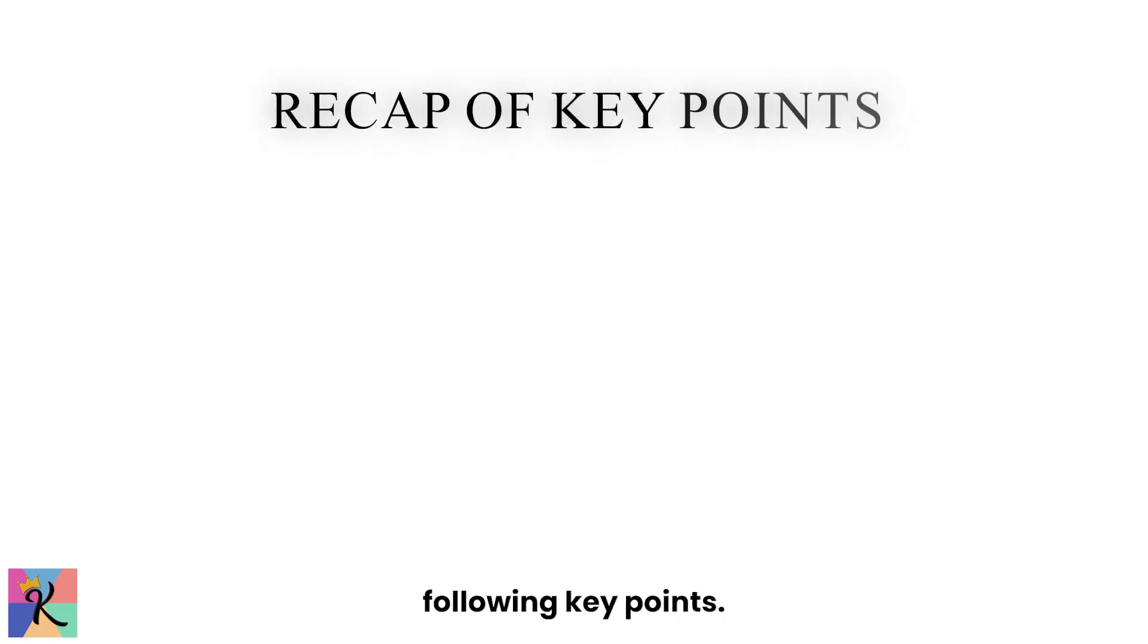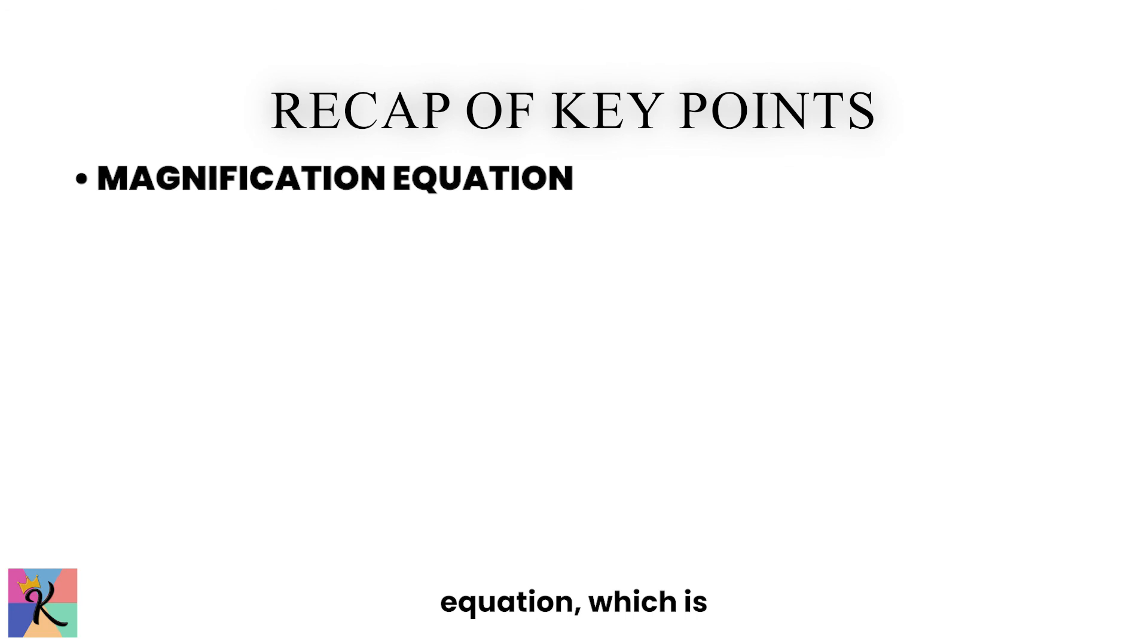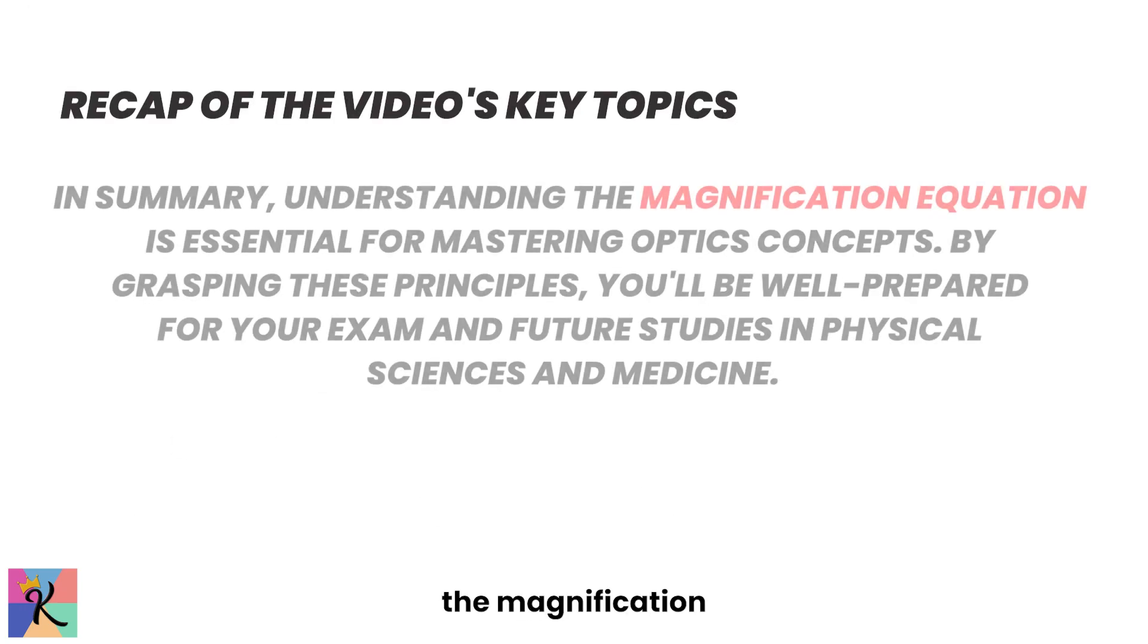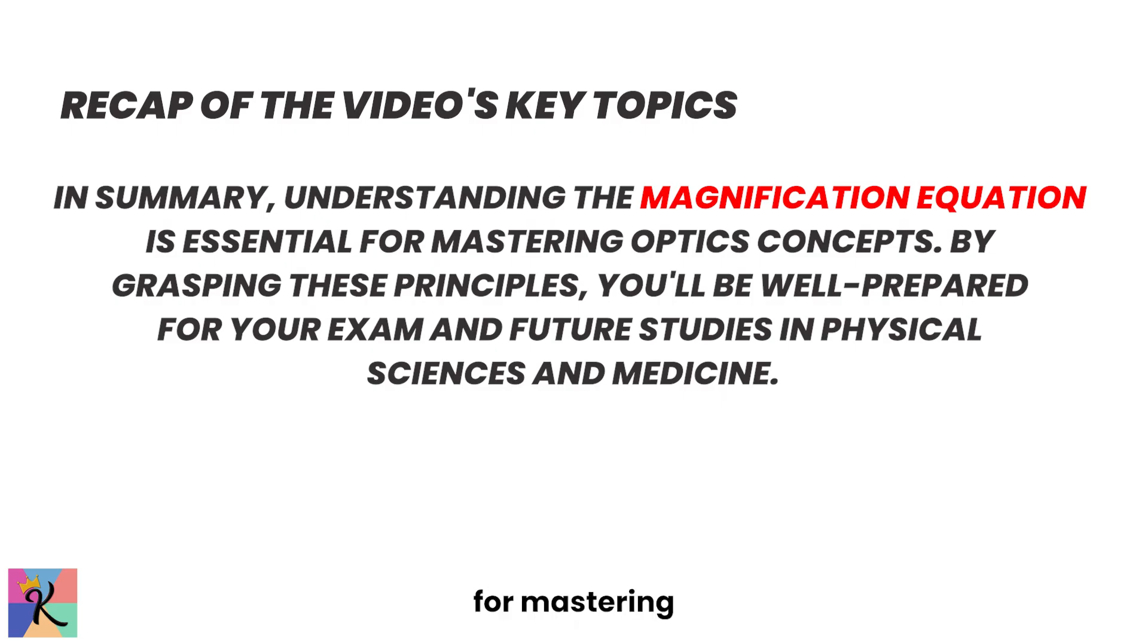To excel on your exam, it's crucial to master the following key points. One, using the magnification equation, which is M equals HI over HO, which equals negative DI over DO. And, understanding that positive magnification indicates upright images, while negative magnification indicates inverted images. So, in summary, understanding the magnification equation is essential for mastering optics concepts. By grasping these principles, you'll be well prepared for the exam and future studies.